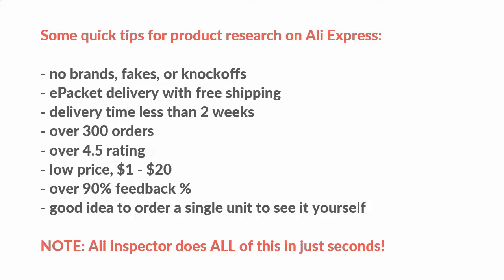You want a product that has a rating over four and a half. You want to find products between a dollar to $20, and you want the seller feedback to be around 90%. It's also a good idea to order a single unit to see the product for yourself. Knowing all of these things, it's really hard to manually search AliExpress to find all these criteria.